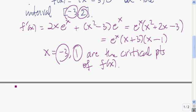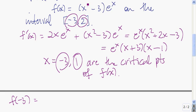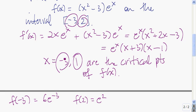Let's start with negative 3. We plug it into the function and get negative 3 squared minus 3 — that's 9 minus 3, which is 6 — times e to the negative 3. Now plug in 2: we get 2 squared, which is 4, minus 3, which is 1, times e squared. This critical point coincides with that endpoint, so we obviously don't need to check it again.